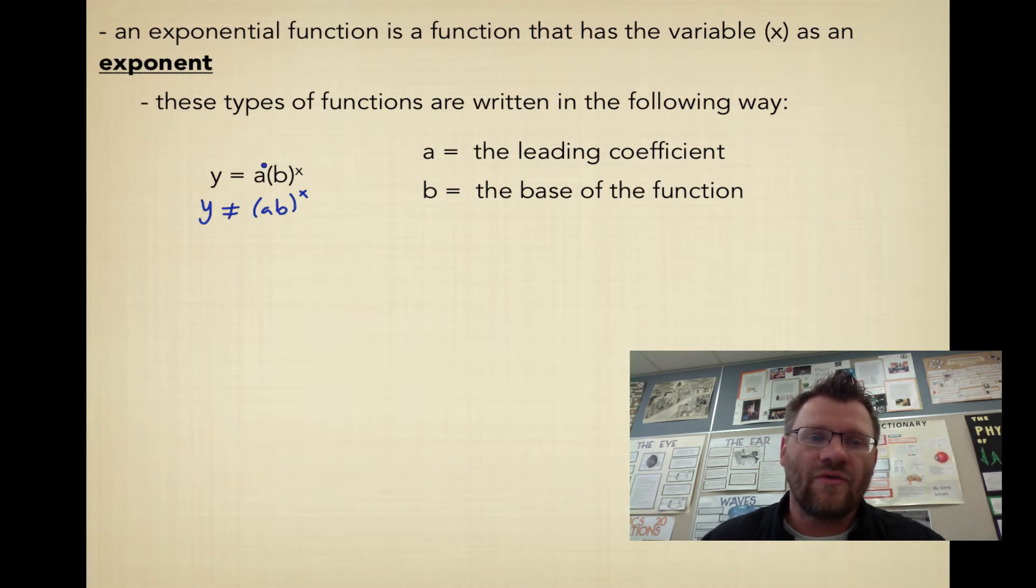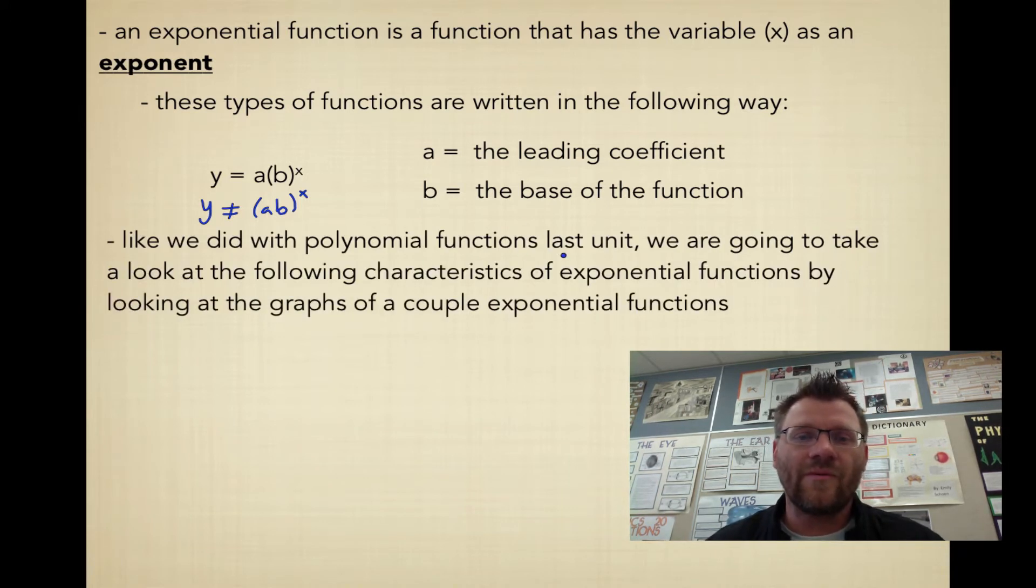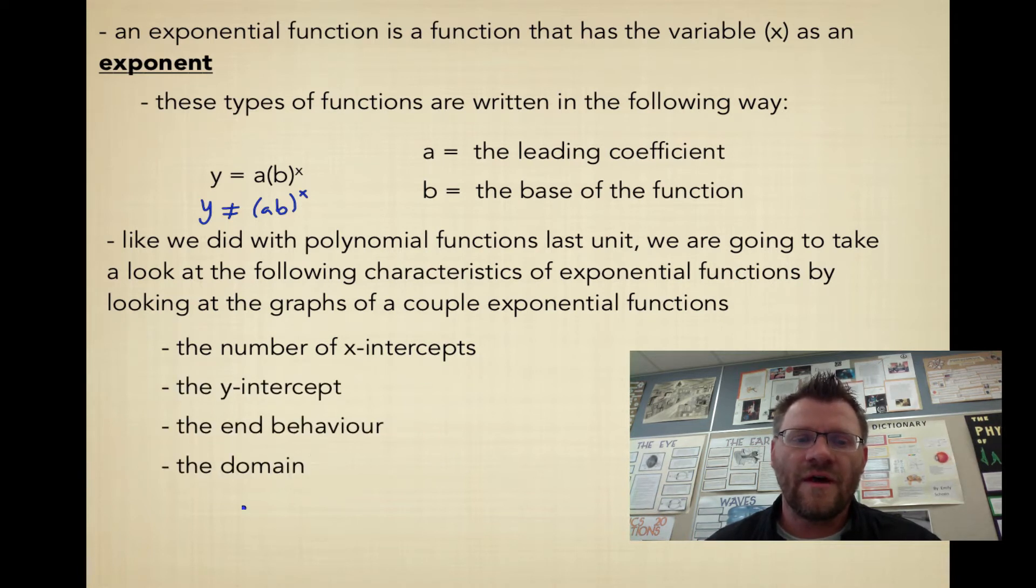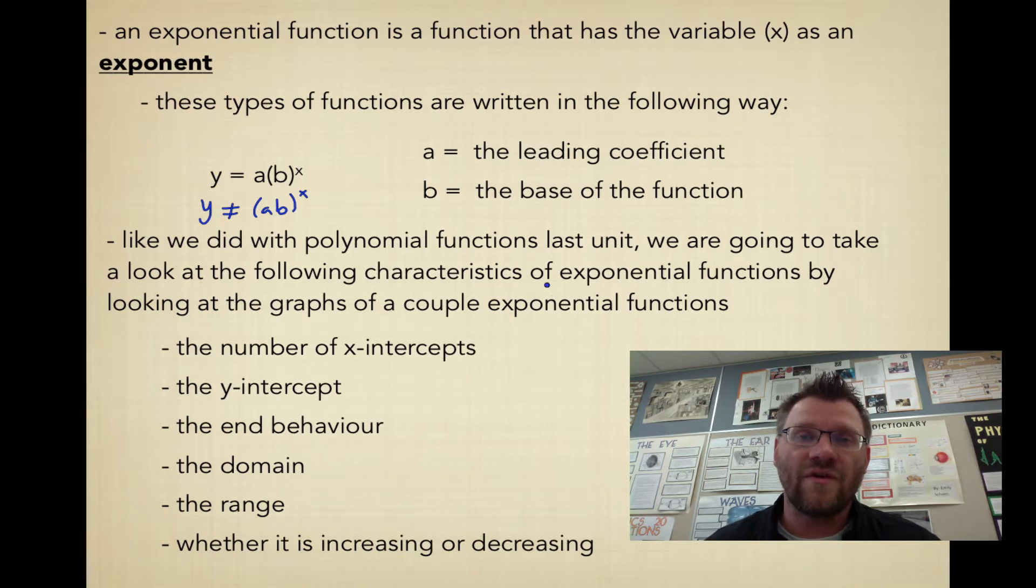Our BEDMAS rules say that we have to do exponents before we do multiplying. So don't multiply these two numbers together, ever. It's a really bad idea. Like we did with polynomial functions last unit, we're going to take a look at the following characteristics of exponential functions by looking at the graphs of a couple exponential functions. We're going to find the number of x-intercepts, the y-intercept, the end behavior, the domain and the range, and we're going to be able to tell whether this function is increasing or decreasing.